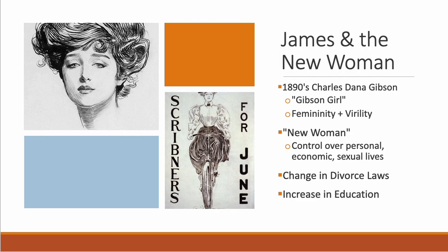One of the epitomes of the new woman is the Gibson girl. In the 1890s, illustrator Charles Dana Gibson began to depict American women in a manner that became famously known as the Gibson girl. It's a style of white womanhood that combined femininity with virility. On the cover of popular Scribner's magazine, the subject confidently rides directly into the gaze of the viewer. Her nipped waist and perfect posture suggest traditional feminine manners; however, she wears bloomers — pants — a garment associated with female independence and strength in the 19th century. The term 'new woman' became increasingly popular at the turn of the century as a way to refer to women who exercised control over their personal, economic, and sexual lives.